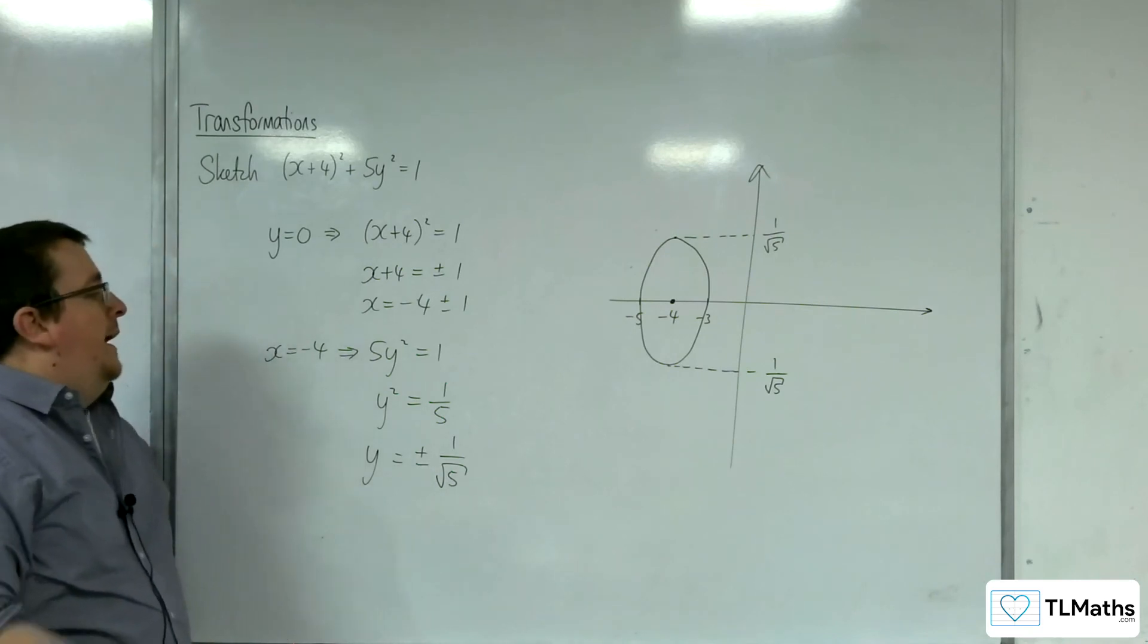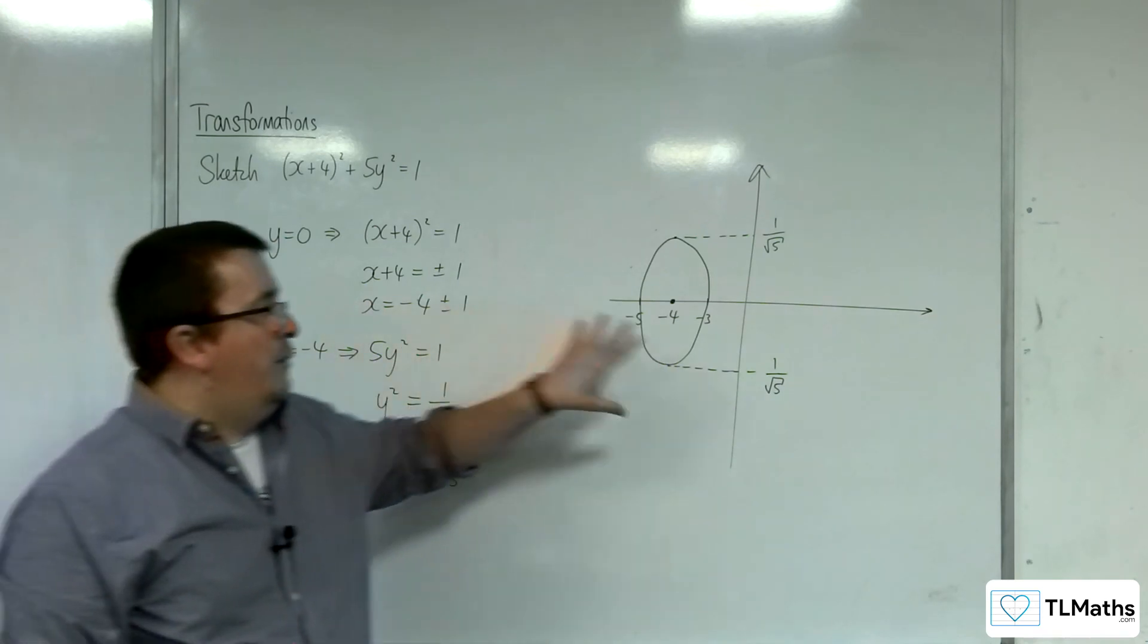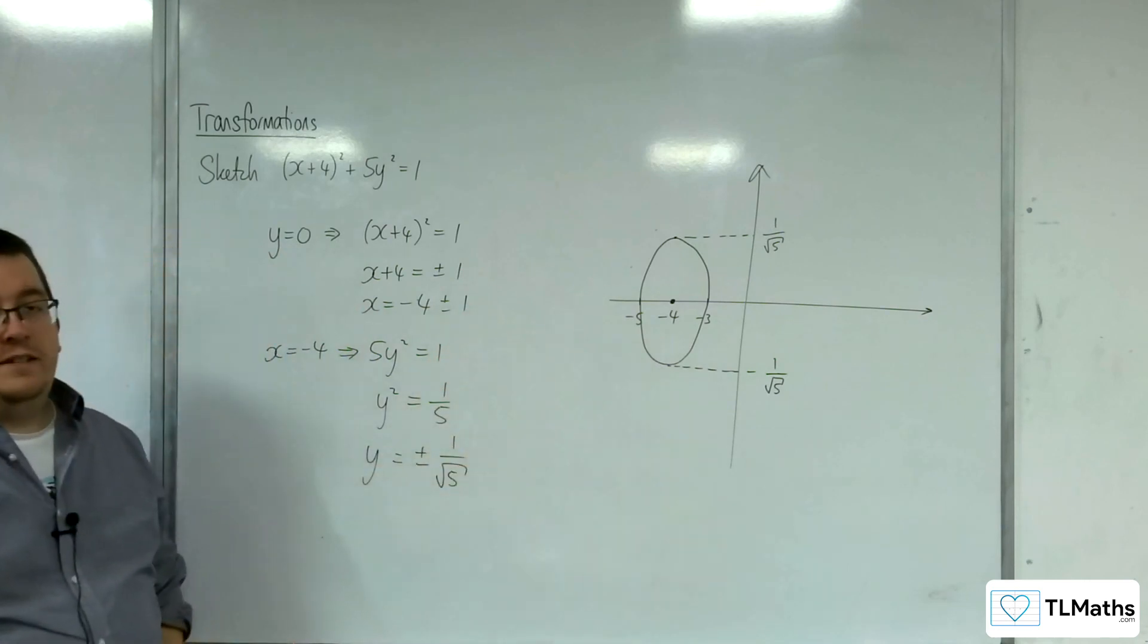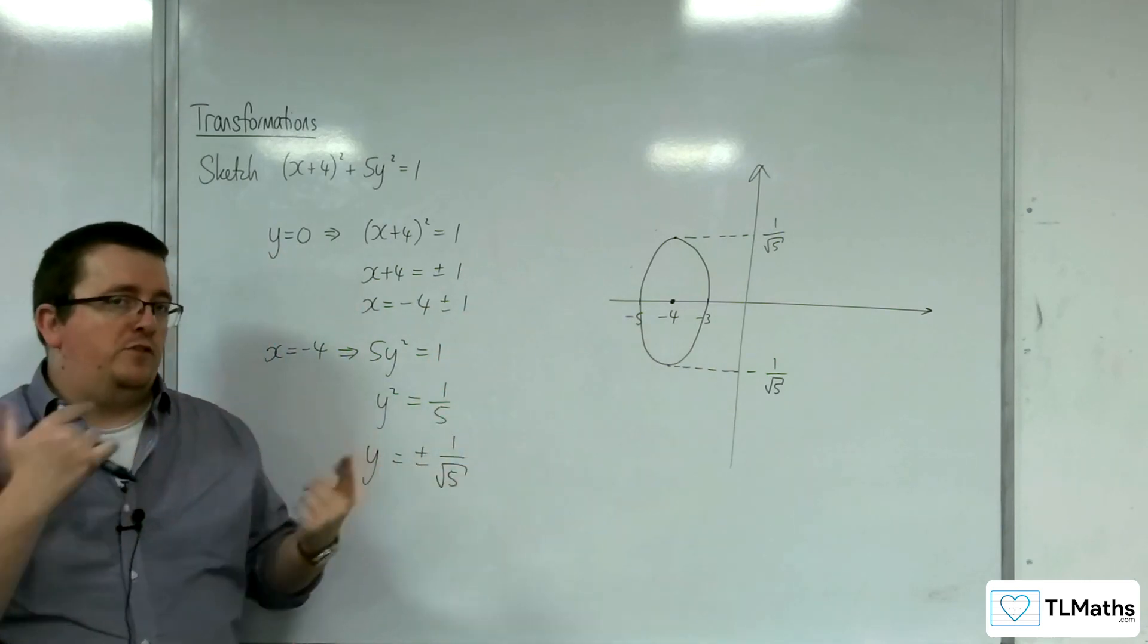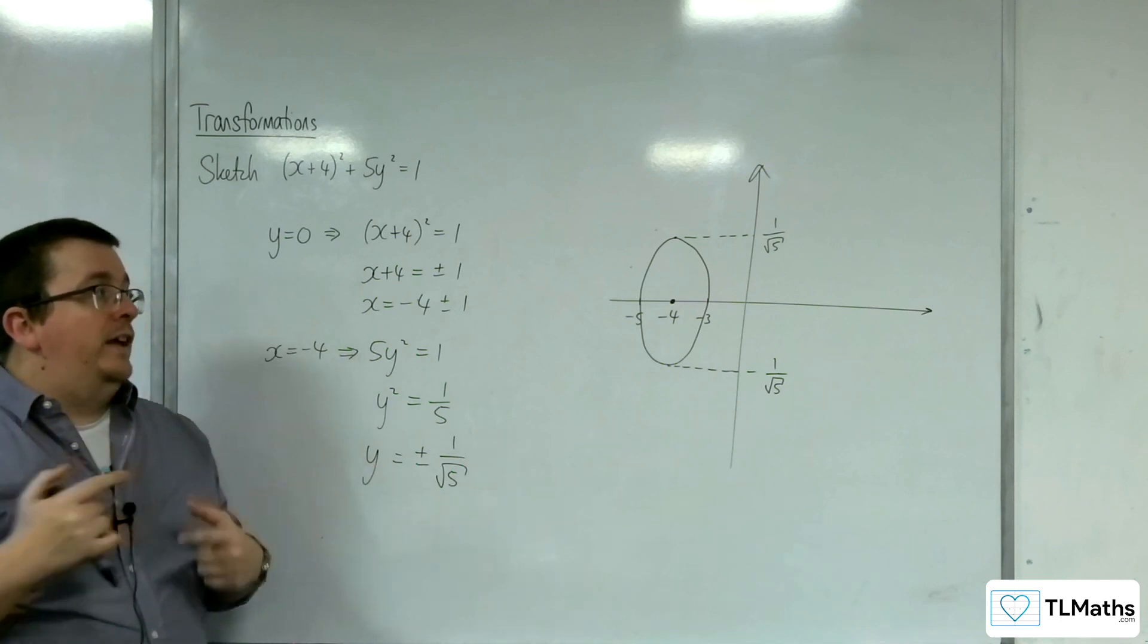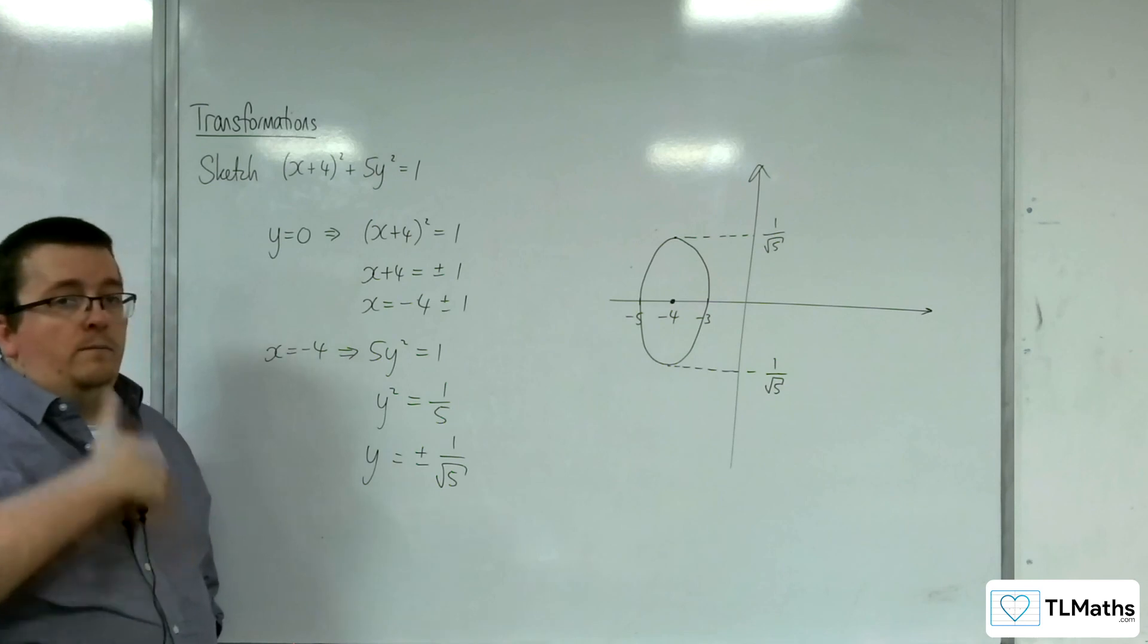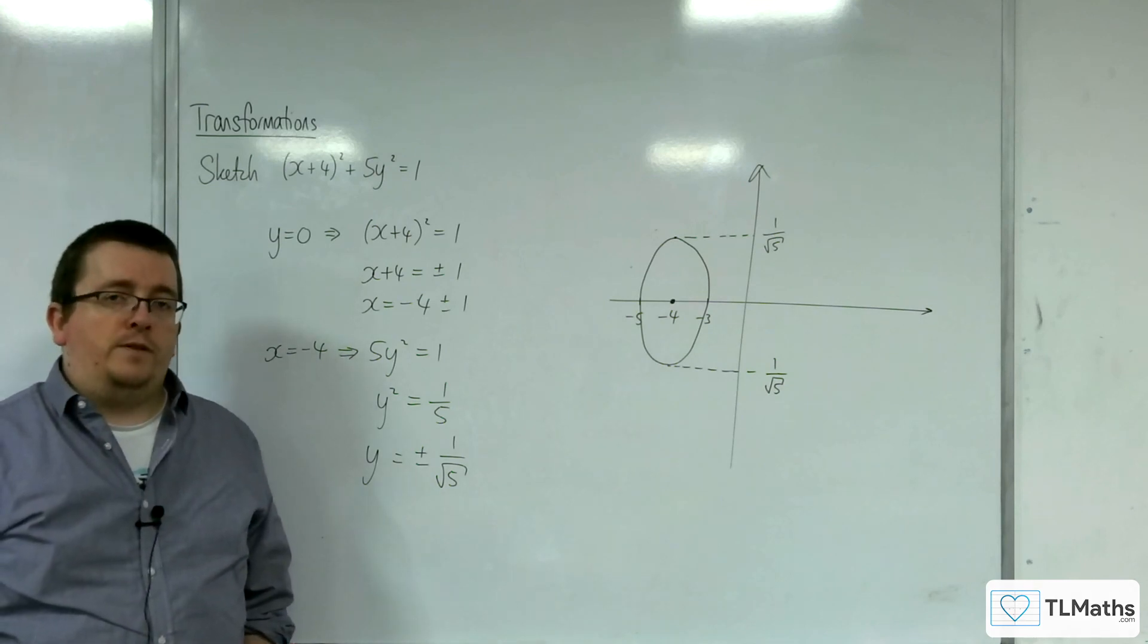So, that is an alternative way of sketching these ellipses by just thinking about the current shape rather than necessarily having to think about the transformations behind the scenes. But I do think always having those in mind is very useful because they play a big part in all of the other types of graphs that we are sketching.